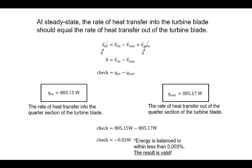That is an example of how to validate a finite volume method result. A similar approach can be applied to any problem. If the method is valid, the energy balance should always come out to be zero within a very small percentage such as this.